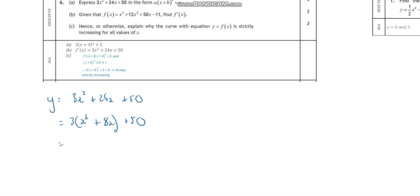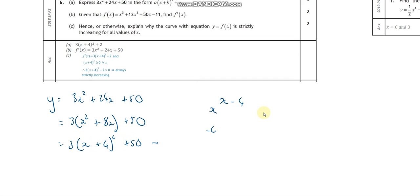I need to half my middle term. So 3 stays the same and I write x plus 4 squared - I've halved this middle term. Then the general rule is that the 50 stays where it is, but I need to take away what I've generated in this bracket. If I was to expand that bracket out I've got x squared, negative 4x and negative 4x, and then 16. So x squared - I want that x squared, that's fine.